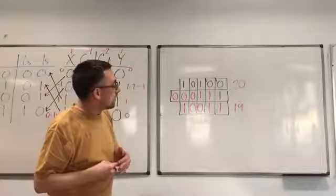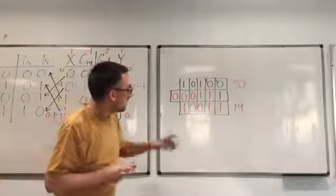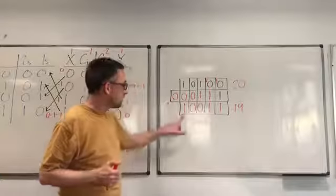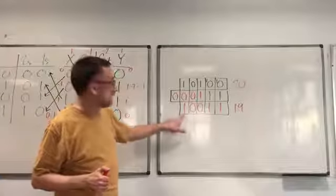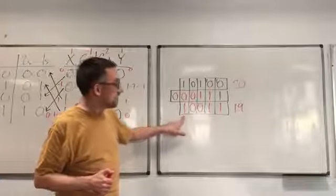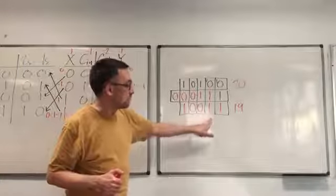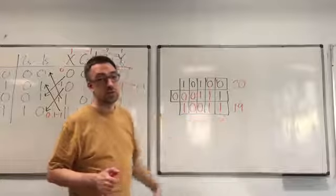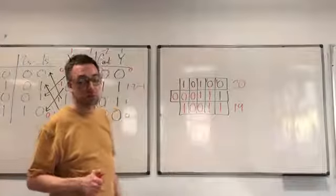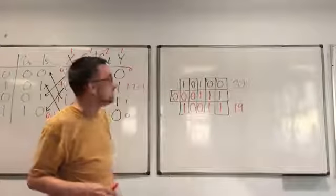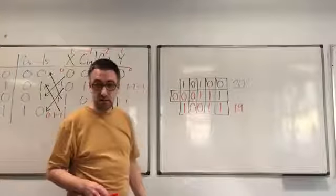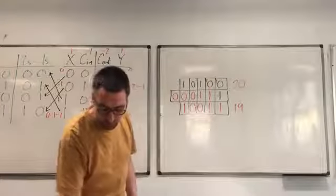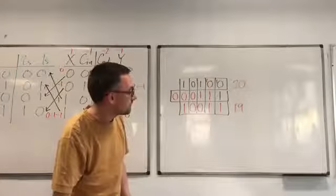So we've successfully completed the calculation. We have a 1 in the 16s column and in the 2s and in the 1s. 16 plus 2 plus 1 is indeed 19. We have successfully subtracted 1 from 20.